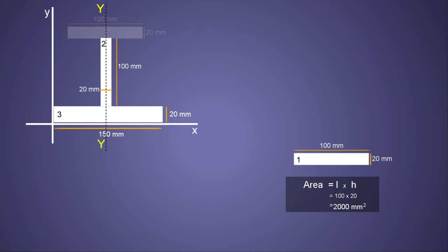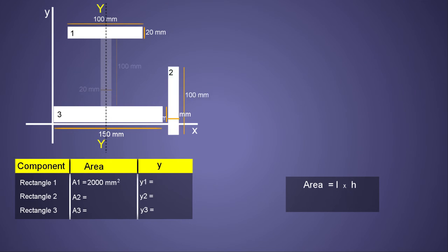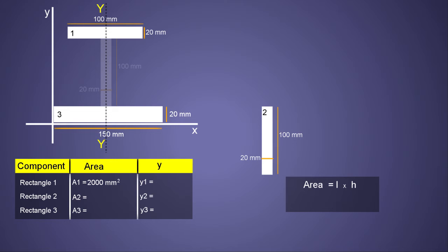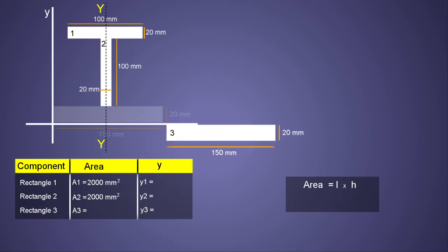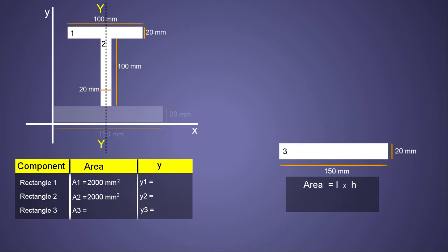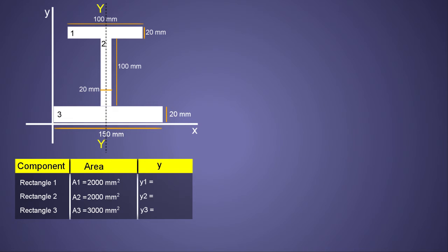We record these values in a tabular column for reference. Rectangle 2 has a length of 20 mm and a height of 100 mm, giving an area of 20 × 100 = 2000 mm². Rectangle 3 has a length of 150 mm and a height of 20 mm, so the area is 150 × 20 = 3000 mm². We are now halfway through the problem.